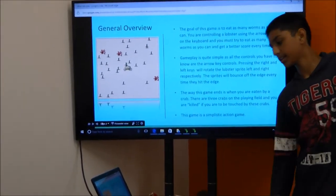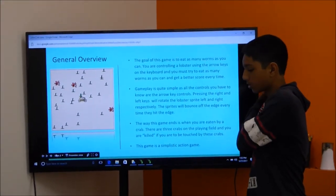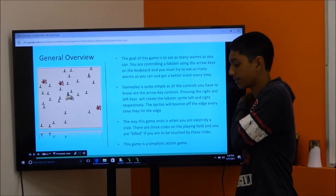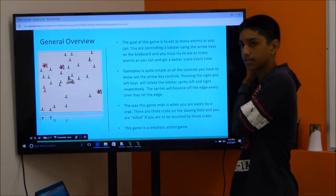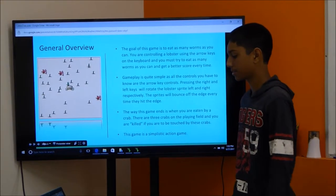And the way this game ends is if you are eaten by a crab. So at the beginning there are always three crabs on the playing field, and if one of, sorry, lobsters, and if you're touched by one of these lobsters, you die.